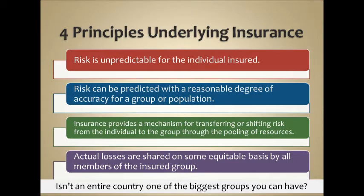Actual losses are shared on some equitable basis by all members of the insured group. This is what went wrong with housing insurance in Florida: if everybody's house gets ruined in the pool, you can't share losses equitably because everybody has so many. Furthermore, it's hard to share losses equitably in a pool with radically different kinds of people — if you have super healthy and super sick people, there's not enough pool to do load balancing. Isn't an entire country one of the biggest risk groups you can have? Isn't that one of the best ways to do underwriting, predict risk at a group level, and really manage costs?